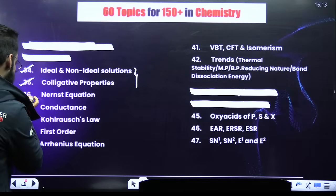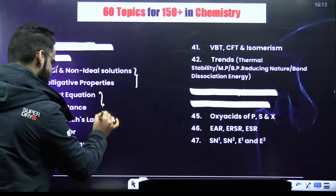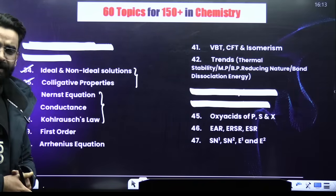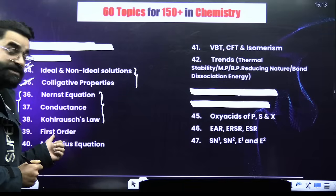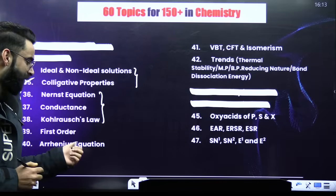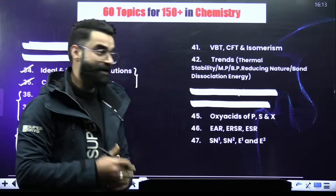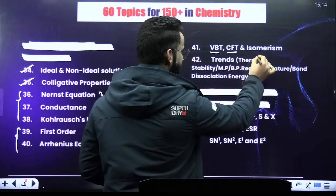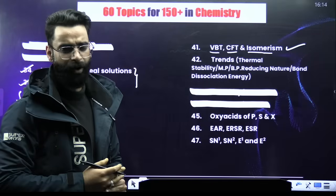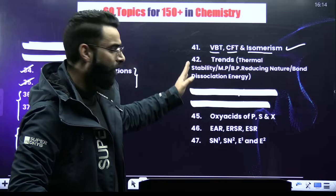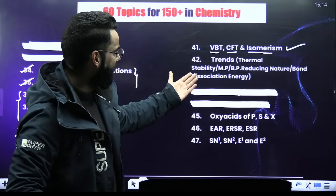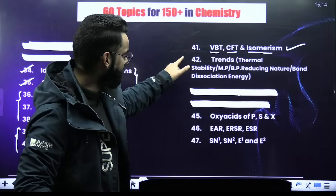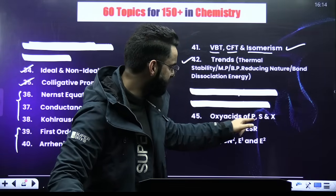In electrochemistry, the three topics from which 90% of questions are asked are the Nernst equation, the conductance part, and Kohlrausch's law. For chemical kinetics, the sure-shot topics are first-order reactions with their different parameters, and the Arrhenius equation. In coordination chemistry, focus on valence bond theory (VBT), crystal field theory, and isomerism. For D and F block elements, you cannot skip thermal stability, melting point, boiling point, reducing nature order, and bond dissociation energy order. Also cover oxy-acids of phosphorus, sulfur, and halogens.